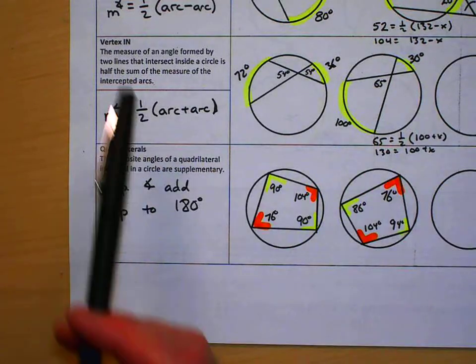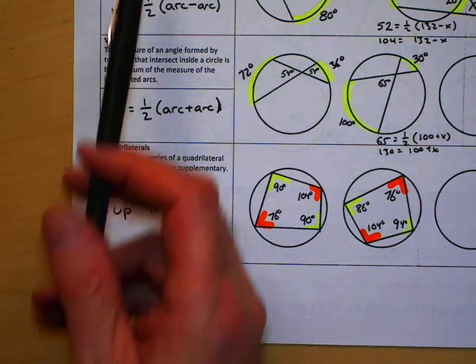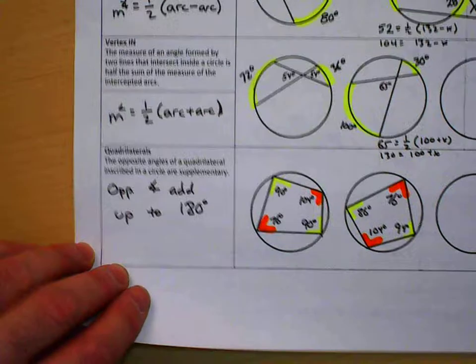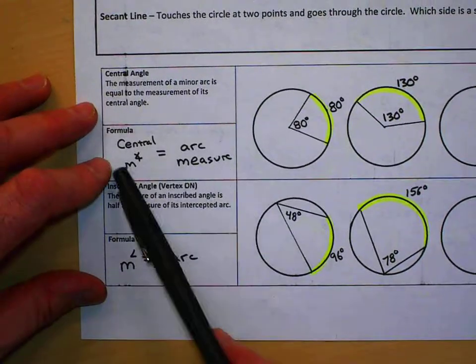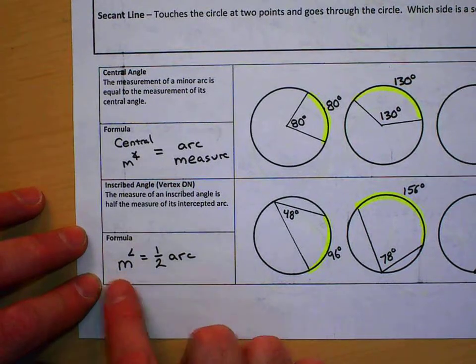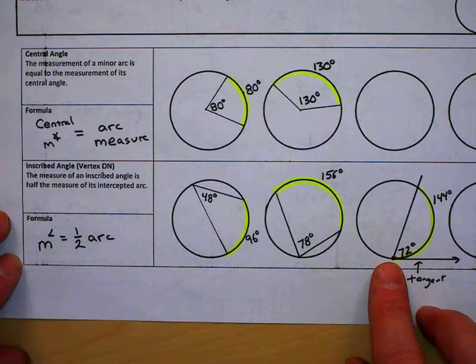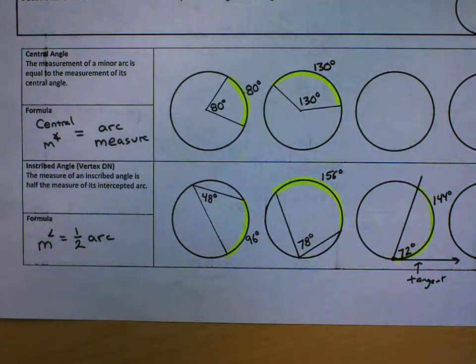And those are the basic rules for angles and arcs. We have inside—add the sum, add and take half. Outside we subtract and take half. We know supplementary in a quadrilateral that's circumscribed. And we also have the typical central angles equal to the arc measure, and we have the one half measure—angle equals one half arc if the vertex is on the circle. Thank you, and we will follow this up with some examples.